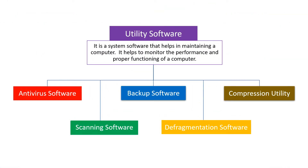Utility software is also a system software that helps in maintaining a computer. It helps to monitor the performance and proper functioning of a computer. Some examples of utility software are antivirus software, backup software, compression utility, scanning software, and defragmentation software.